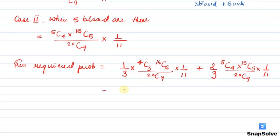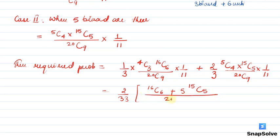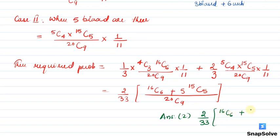Simplify करेंगे तो 2/33 हम दोनों terms से common ले सकते हैं। और जब 2/33 common लेंगे, तो हमारे पास बचेगा: (16C6 + 5 × 15C5) / 20C9। So हमारा final answer है Option number 2 — the required probability is 2/33 × (16C6 + 5×15C5) / 20C9।